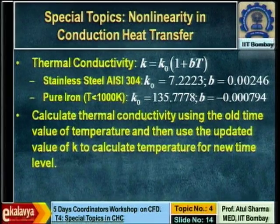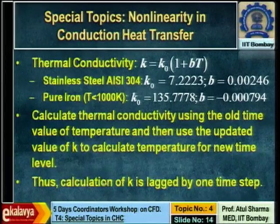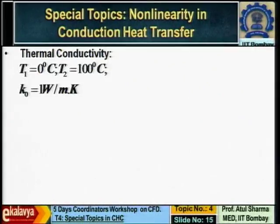Since k is changing with time and temperature calculation depends on k, these are coupled equations. In CFD we solve one equation at a time. We calculate k using the temperature from the previous time level, then once we get the updated k we solve the heat conduction equation for the new temperature. So the calculation of k is lagged by one time step. Since the real b values for stainless steel and iron produce very little change in the curve, I have taken a hypothetical problem to show an appreciable difference.